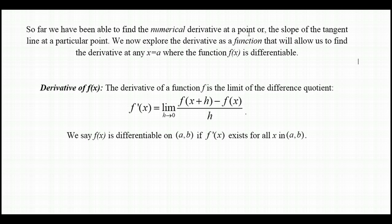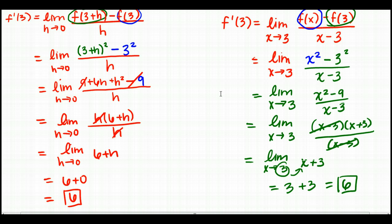So far we've been able to find the numerical derivative at a point — the slope of the tangent line at a particular point. Now we're going to explore the derivative as a function, which will allow us to find the derivative at any x equals a where f of x is differentiable. In the last session, we did all that work just to find the derivative at the one point x equals 3 and got a slope of 6. If I changed to x equals 10, we'd have to redo the whole process.